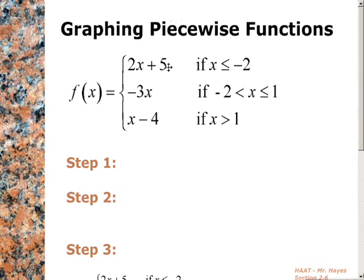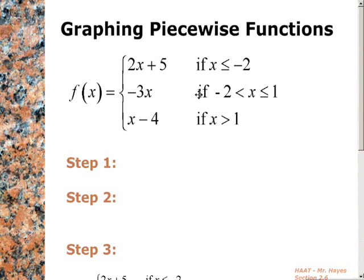So here we've got three different sections. F of x has three conditions, and again, as we talked about in class, it's like sorting laundry or you've got a sorting bin going on. If x is less than negative 2, we do this. If x is less than or equal to negative 2, we're going to do this rule. If x is anywhere larger than negative 2 and all the way up to and including 1, then we're going to do this rule. And last but not least, if x is bigger than 1, then we do this rule.